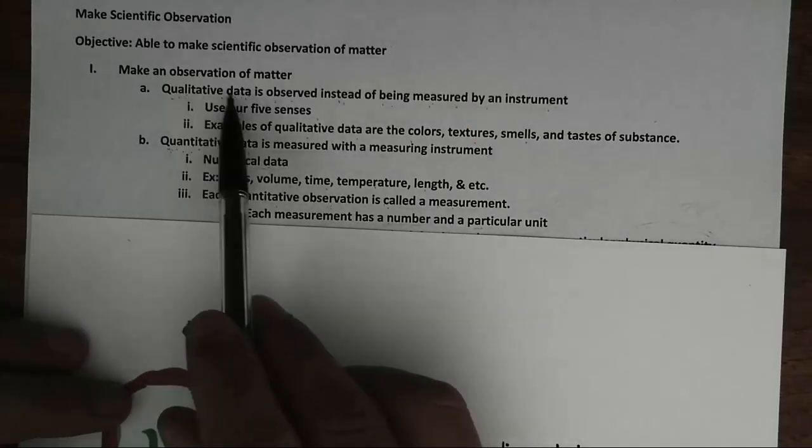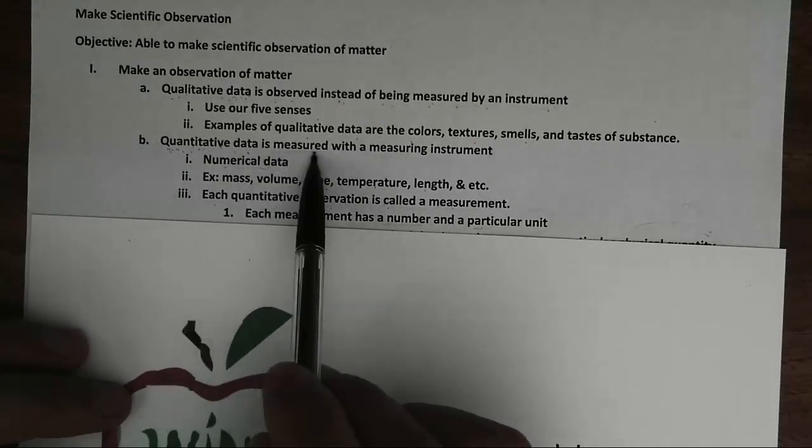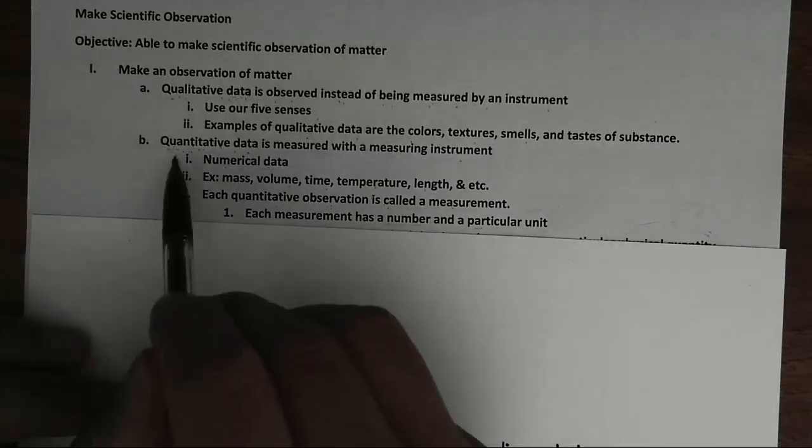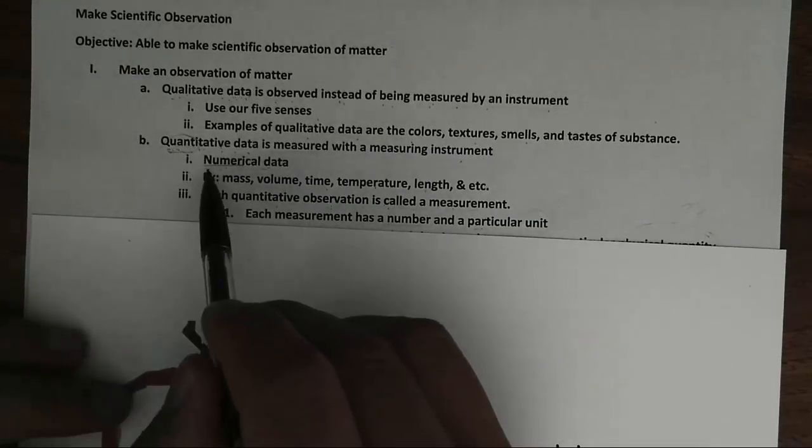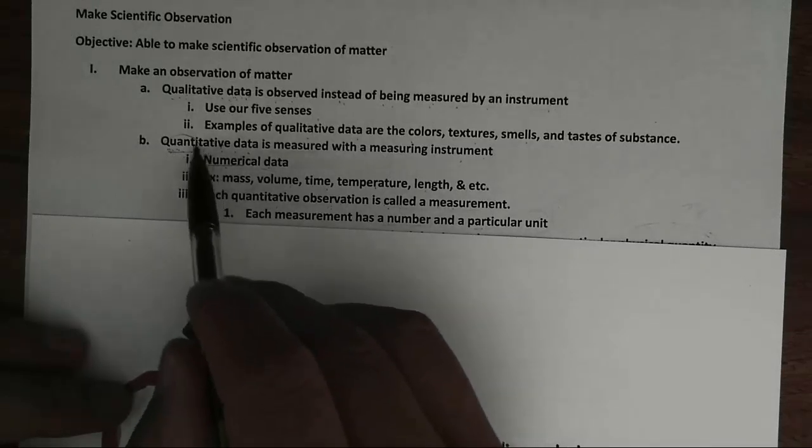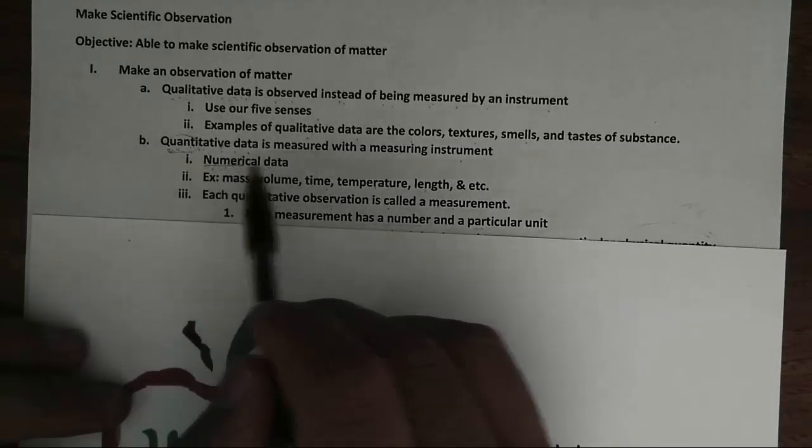Now, unlike qualitative data, quantitative data is measured with a measuring instrument. When we look at the word quantitative, think of the word quantity. When we think of the word quantity, we think of number. So quantitative data is basically numerical data.